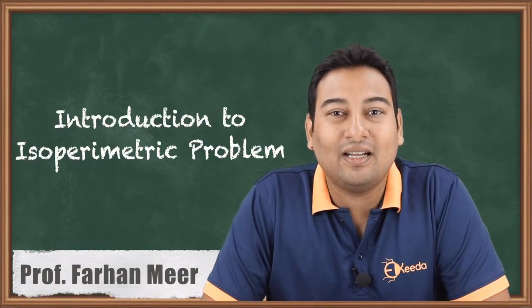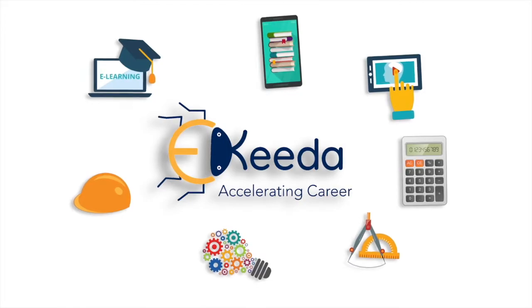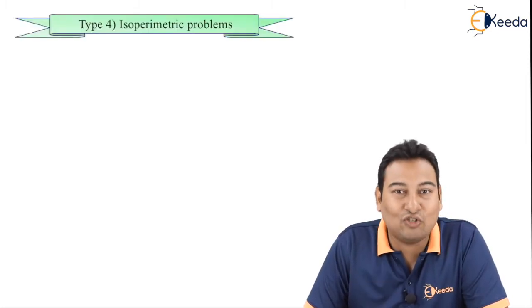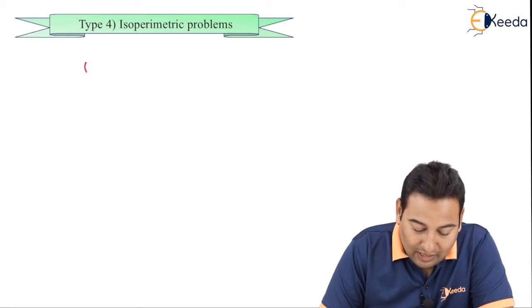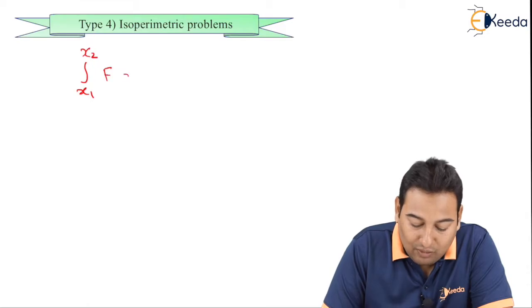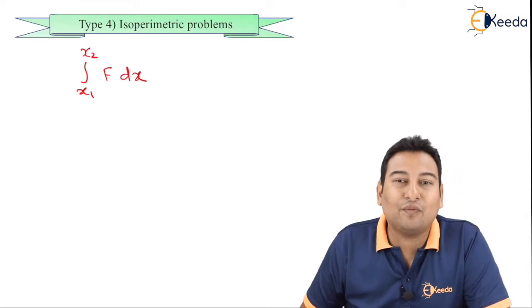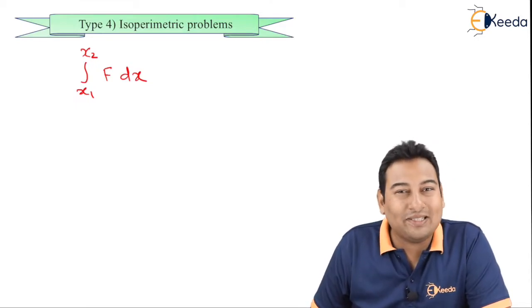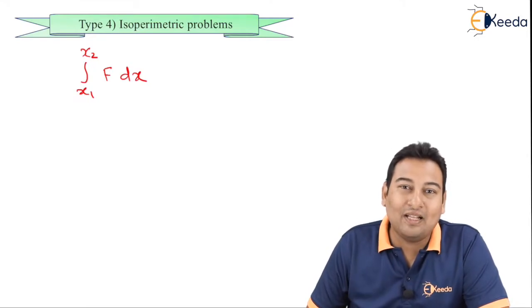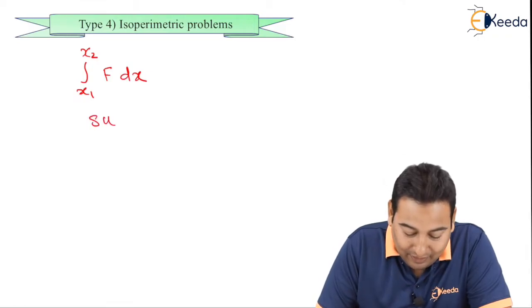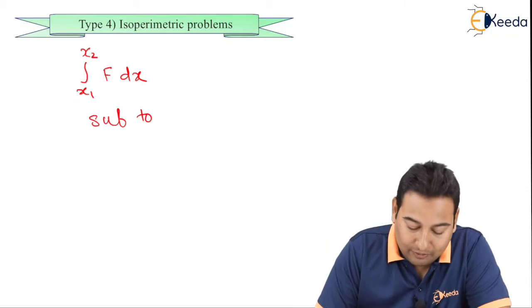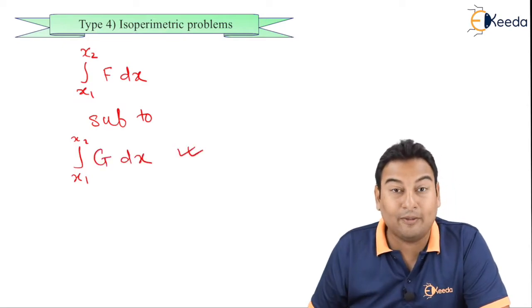Hello friends, in this video we'll be discussing Type 4 isoperimetric problems. Till now we are done with Type 3, that is the Rayleigh-Ritz method. Now we're starting with Type 4: isoperimetric problems. Till now, the aim was to evaluate the functional from x1 to x2, given in terms of x, y, and y dash. The difference now is that an additional constraint will be given to us — let's name it g.